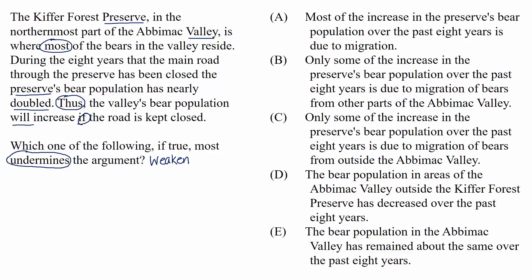There are a lot of pieces to pay attention to here because sometimes students rush through a question like this and misunderstand the parameters given. What's the conclusion? It's pretty safe to identify the last sentence as the conclusion, since it starts with 'thus.' It's a prediction and the rest of the passage looks exactly like it's giving information as support. So our conclusion is that the valley's bear population will increase if the road is kept closed. This is a conditional prediction: if we keep the road closed, the valley will have more bears.